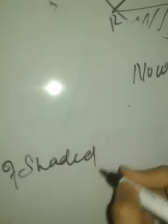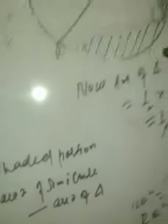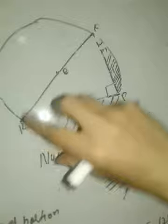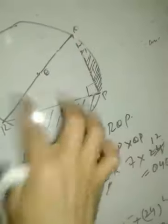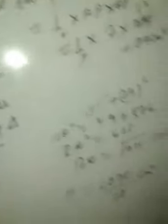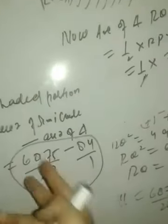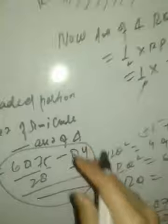Now, area of shaded portion = area of semicircle − area of triangle. That is 6875/28 − 84 square centimeters. Use a calculator to find the exact value, and that will be the required area of the shaded portion. This was all about today's video lecture.